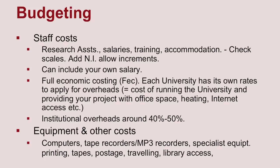So that's staff costs — beware that national insurance might add 10%, then you add another 40–50% overhead, so costs go up quite a bit from the salary itself. Then we do need some equipment. Computers are the most common — included in almost every bid for the researchers. If you employ someone new, you have to buy them something to work on; that's not included in the accommodation overhead. There are also tape recorders and MP3 recorders for interviews.